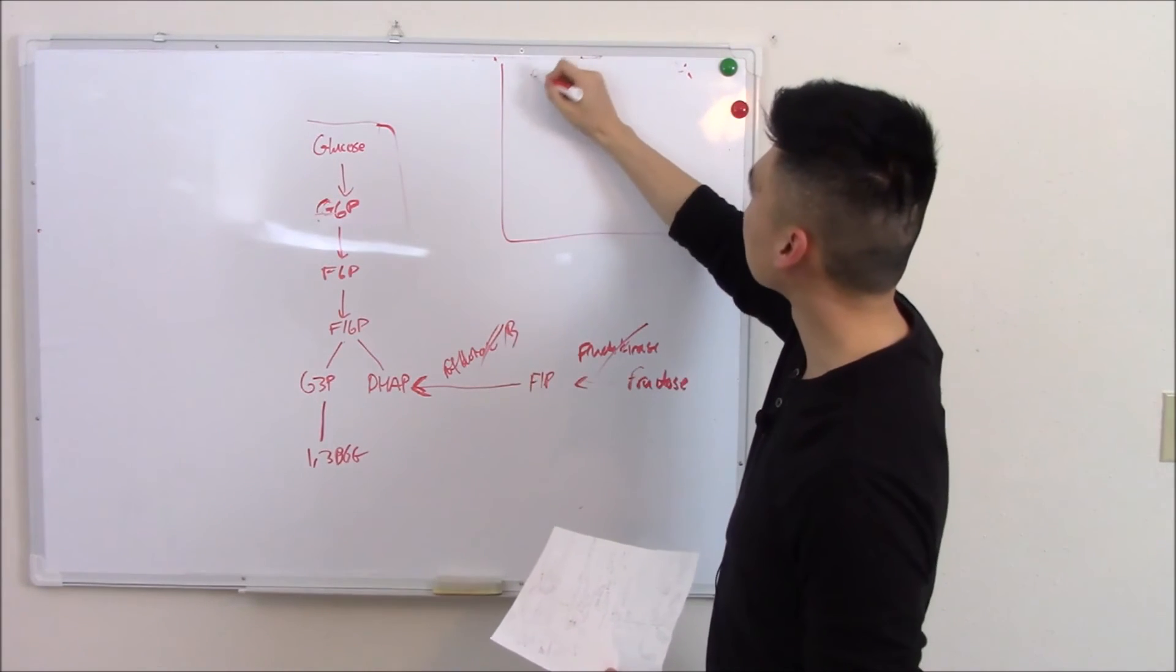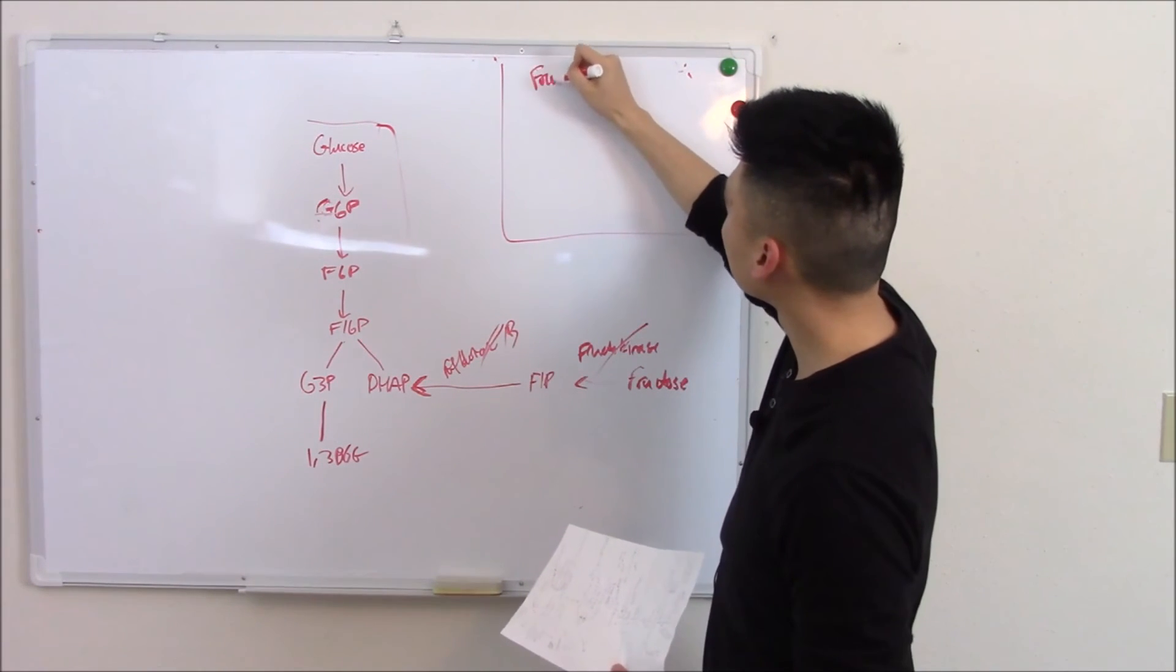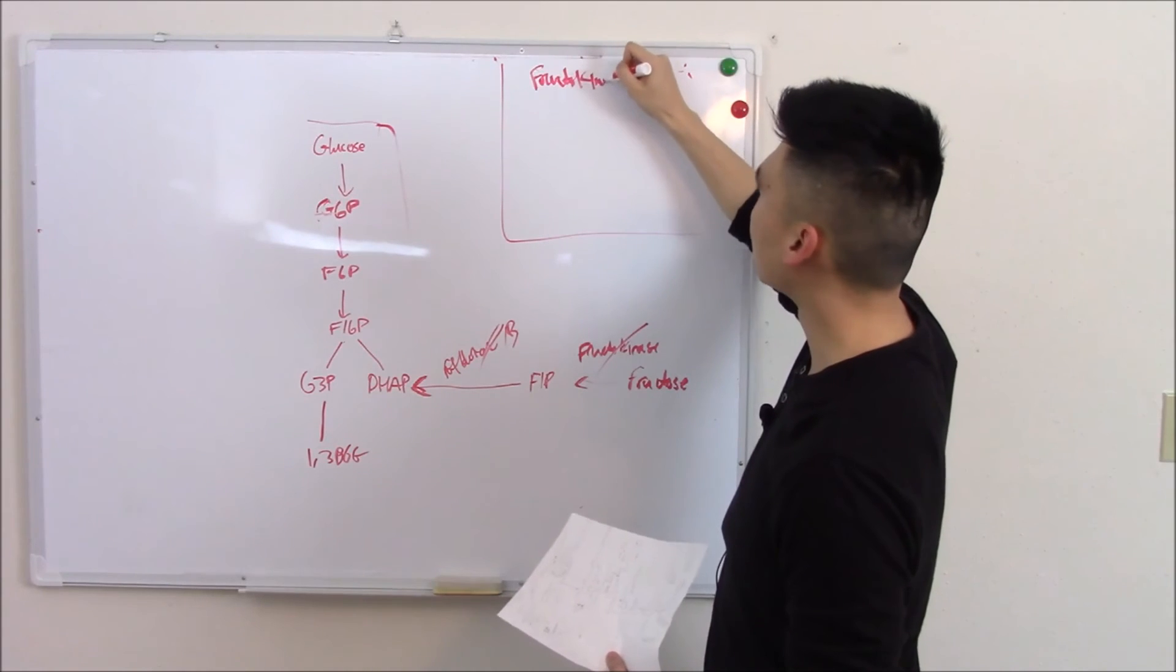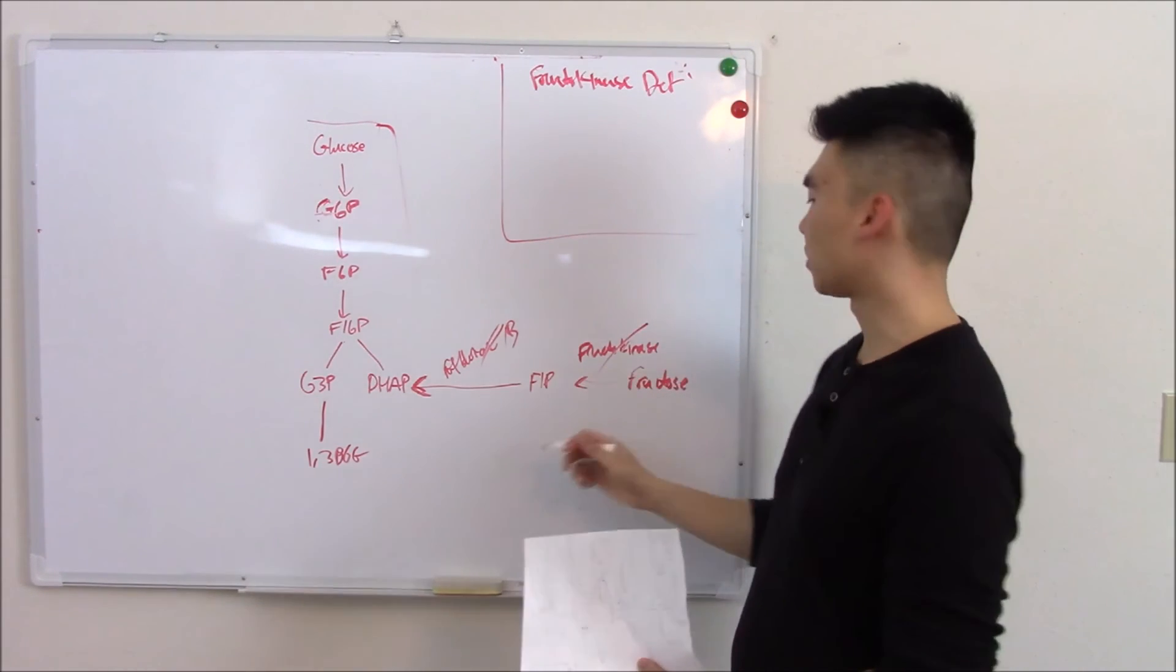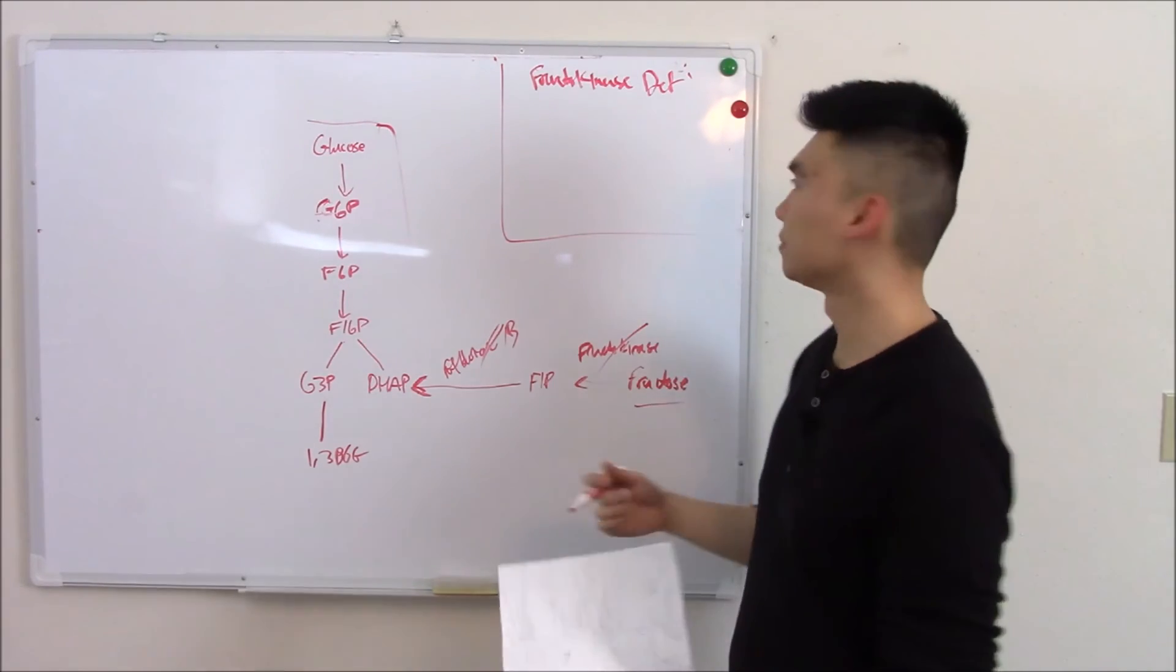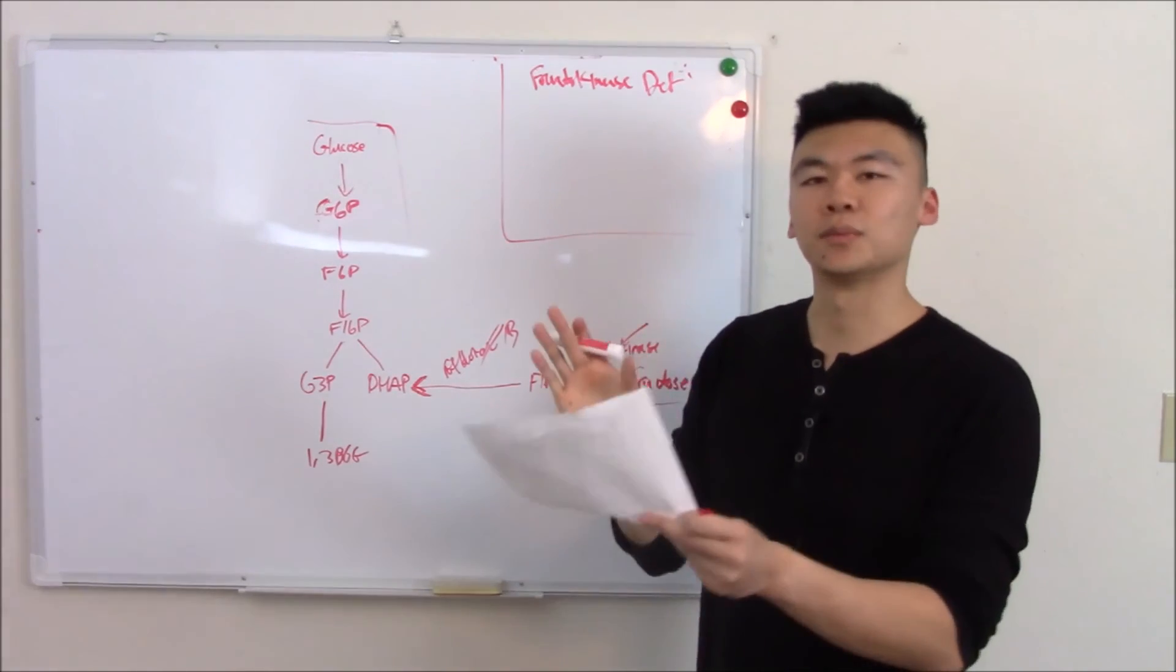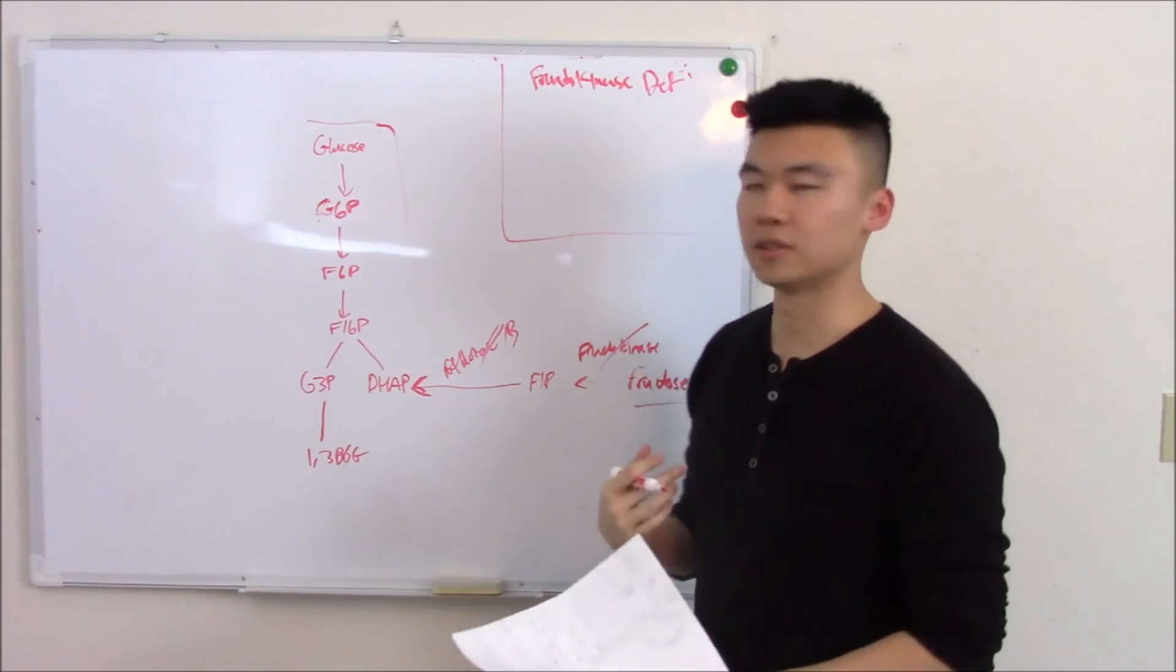So fructokinase deficiency, pretty much benign. You can't trap it in the first place. So you just kind of pee out any excess. Try and limit the fructose. Try to limit the fruit juice. Baby should be fine.